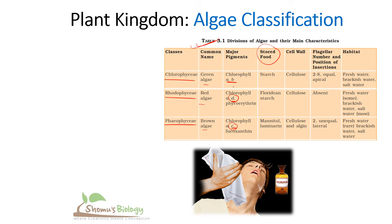To summarize: green algae has chlorophyll a and b; red algae has chlorophyll a and d, where a is required for photosynthesis and d gives red coloration; and brown algae has chlorophyll a and c for brown coloration. Now let's talk about the short trick to remember the algae classification.